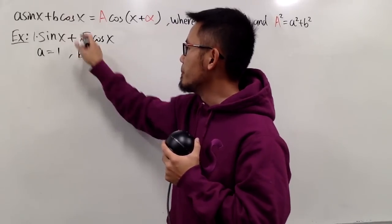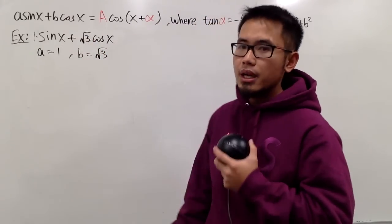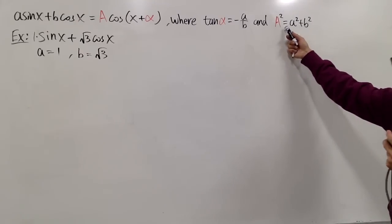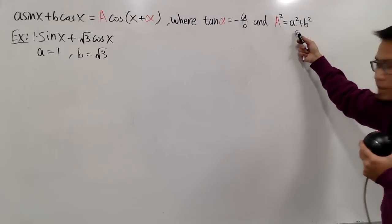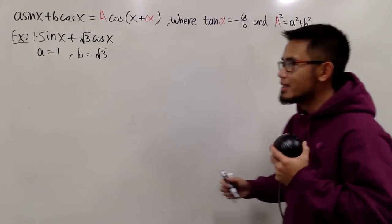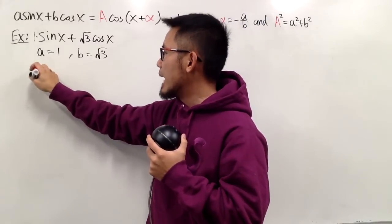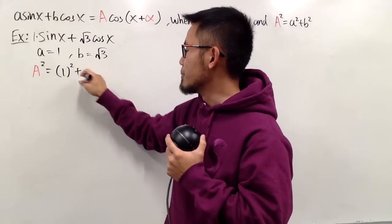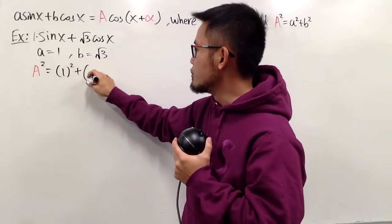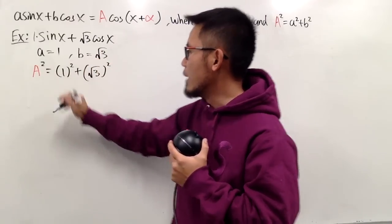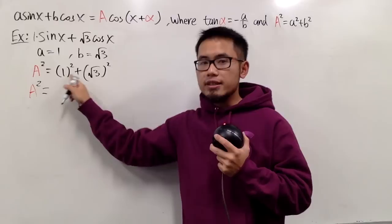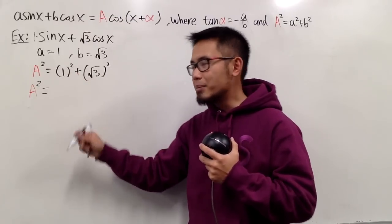So we know little a is equal to 1 in our situation. And from here, you see that little b is equal to square root of 3. And here we have the condition on alpha, and this is the condition on capital A. I think this is easier, so let's get to work on this first.